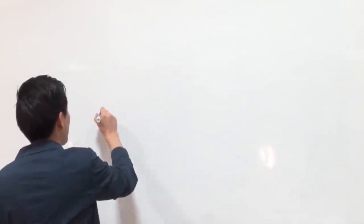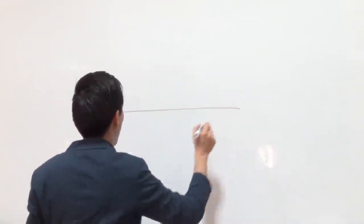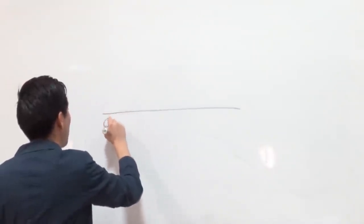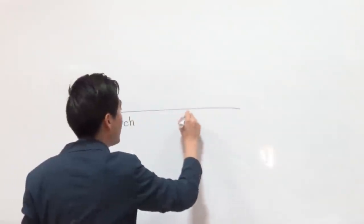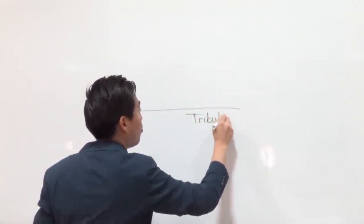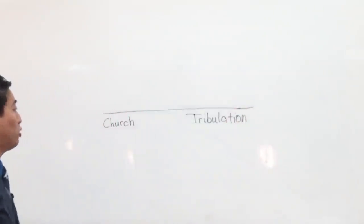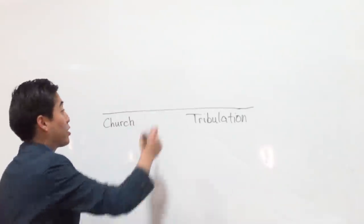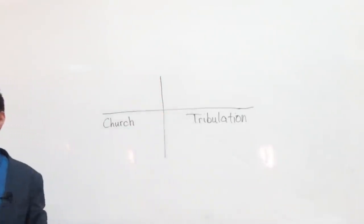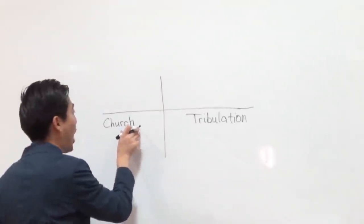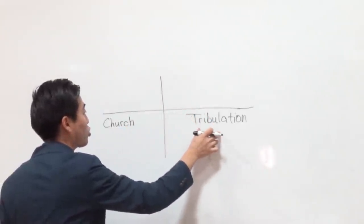If you don't do that and you combine all the verses together, thinking they all apply to you, you're going to come up with a mess of wrong doctrine and confusion. You can find the right doctrine when you properly divide things to the right people and the right time period. That's dispensationalism.